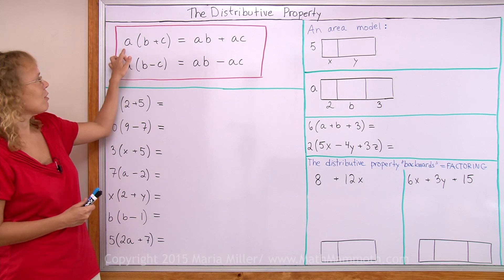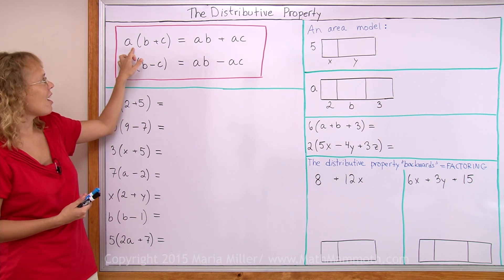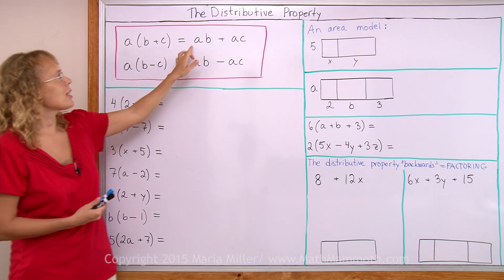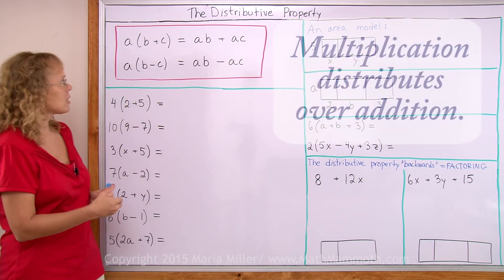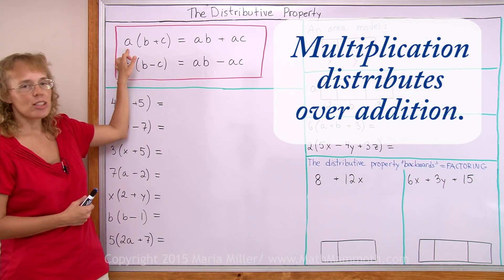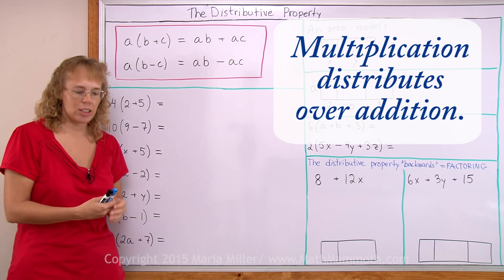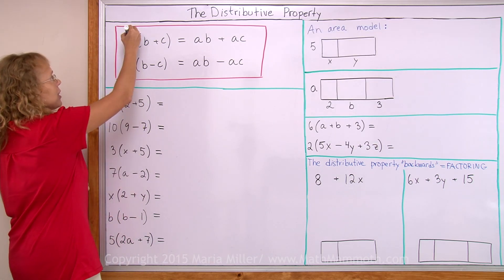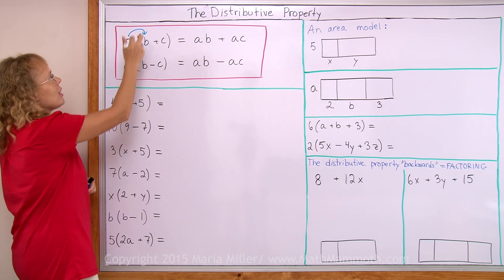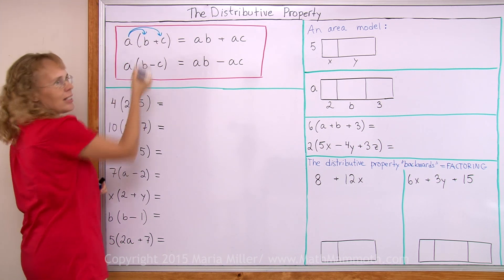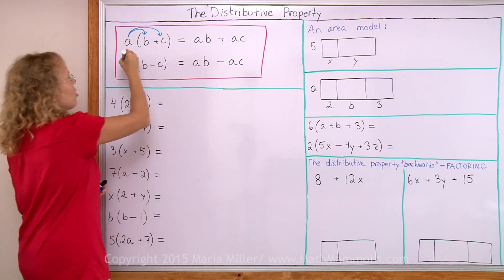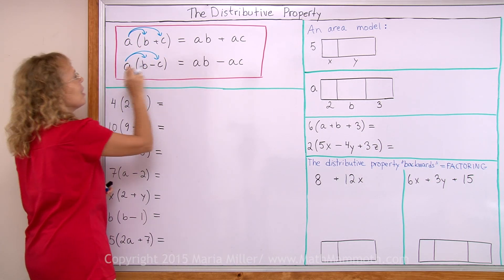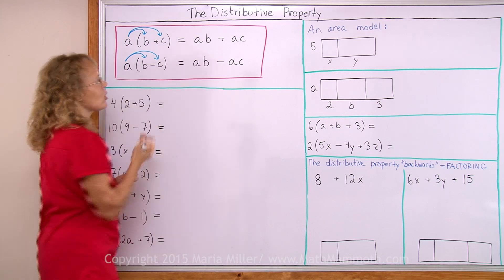Basically it says that if you have a number a here, a times the quantity b plus c, then that is the same as a times b plus a times c. We also say that multiplication distributes over addition. Many people use these little arrows like this - you have to multiply a times b and then also a times c. It works the same with subtraction.